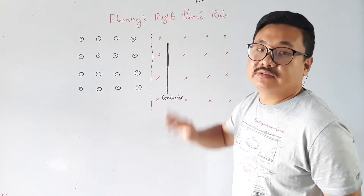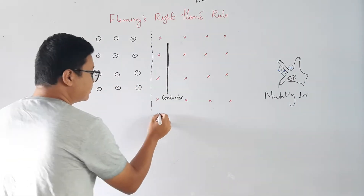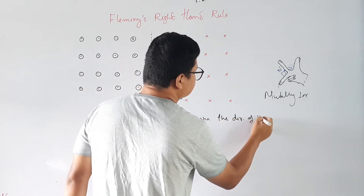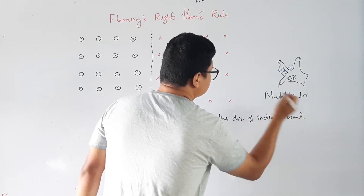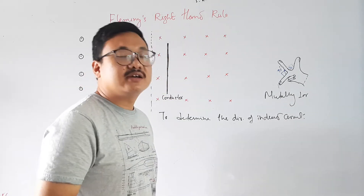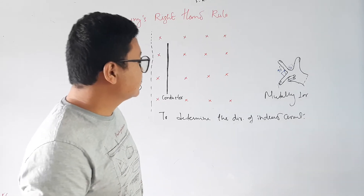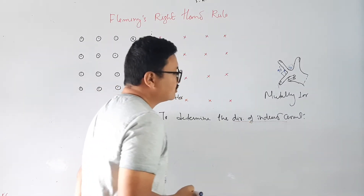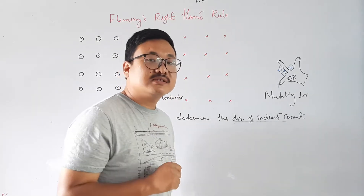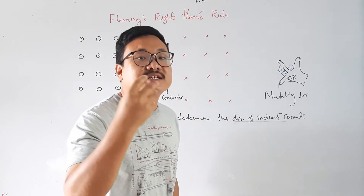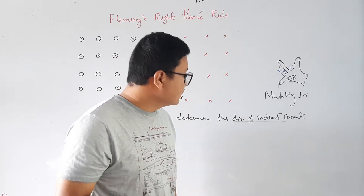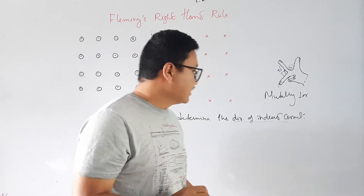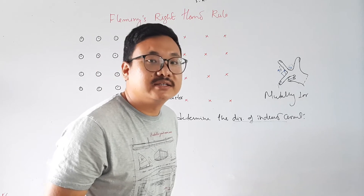The use of Fleming's Right Hand Rule is very important to determine the direction of induced current — this is Lenz's Law. In some cases it is very useful to use Fleming's Right Hand Rule. Please don't get confused with Fleming's Left Hand Rule, which is used to determine the direction of force on a charge or force on a current-carrying conductor. Here we use it to determine the direction of induced current.